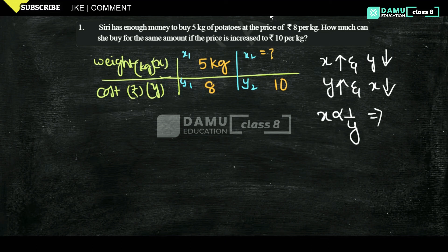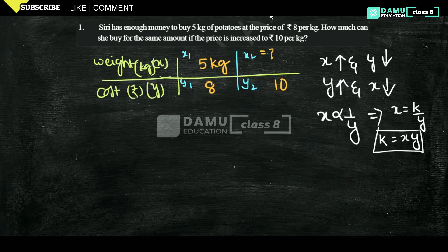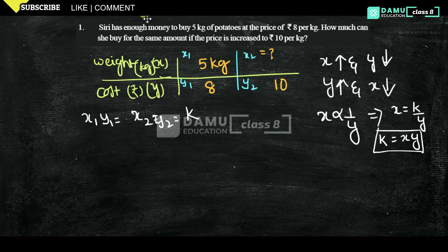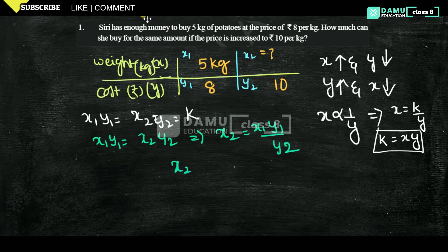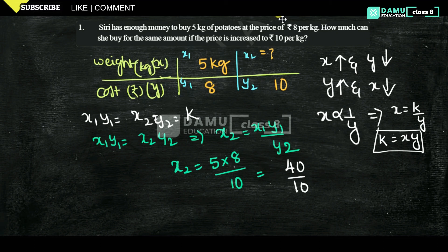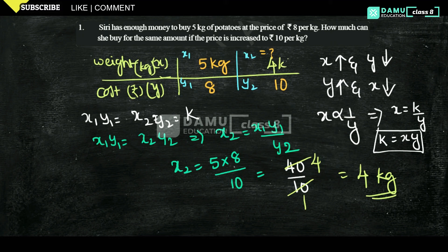Since weight is inversely proportional to cost, x equals k divided by y, which means k equals x times y, so x1·y1 equals x2·y2 equals k. Therefore x2 equals x1·y1 divided by y2. So x2 equals 5 times 8 divided by 10, which gives 40 divided by 10, equals 4. So we can buy 4 kg of potatoes with the same amount at 10 rupees per kg. Thanks for watching, please subscribe.